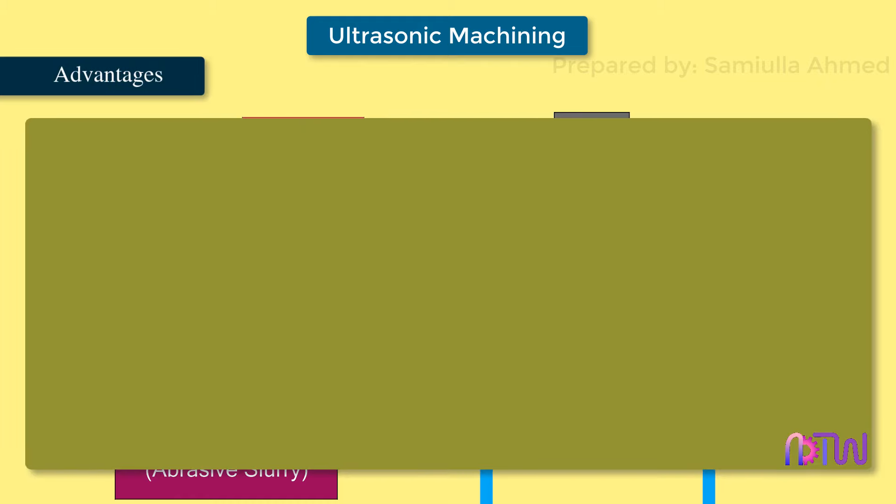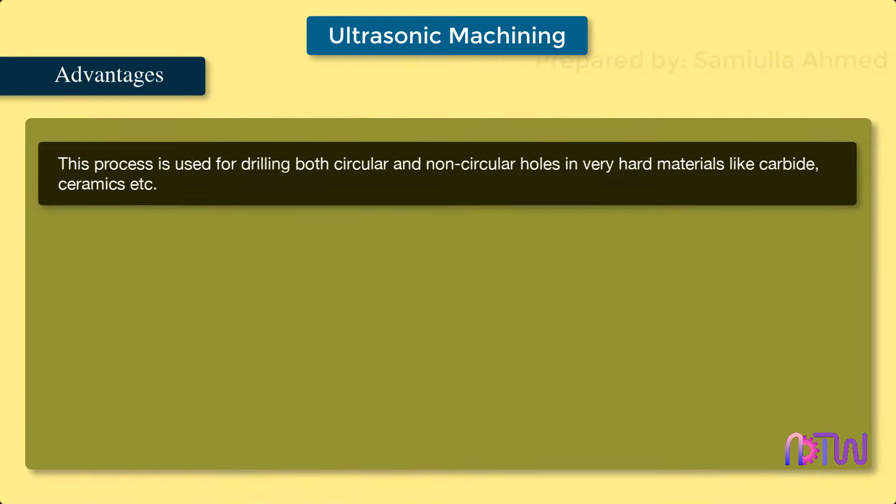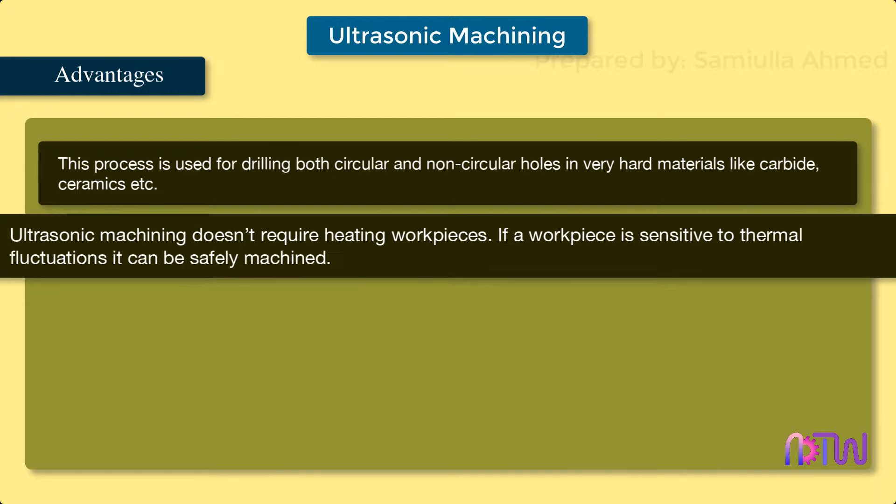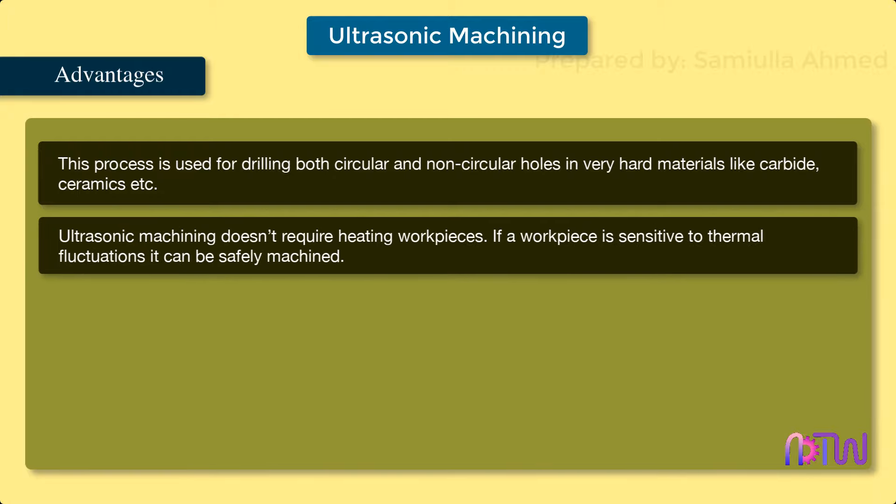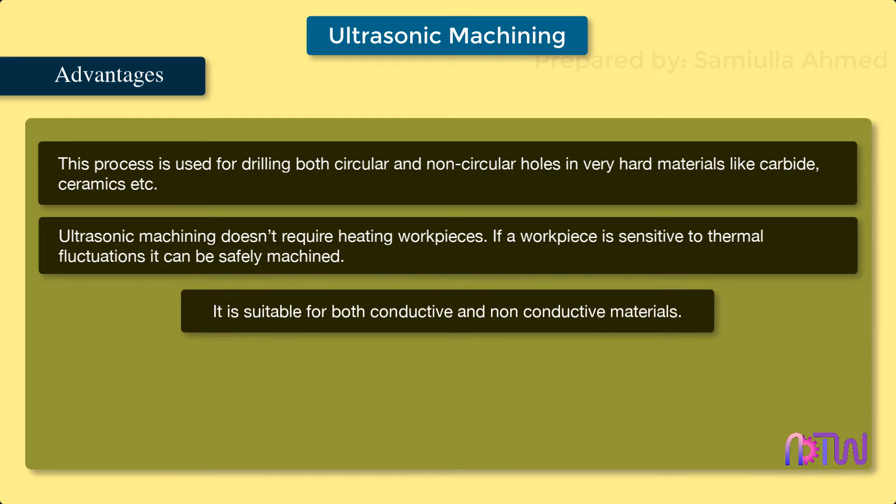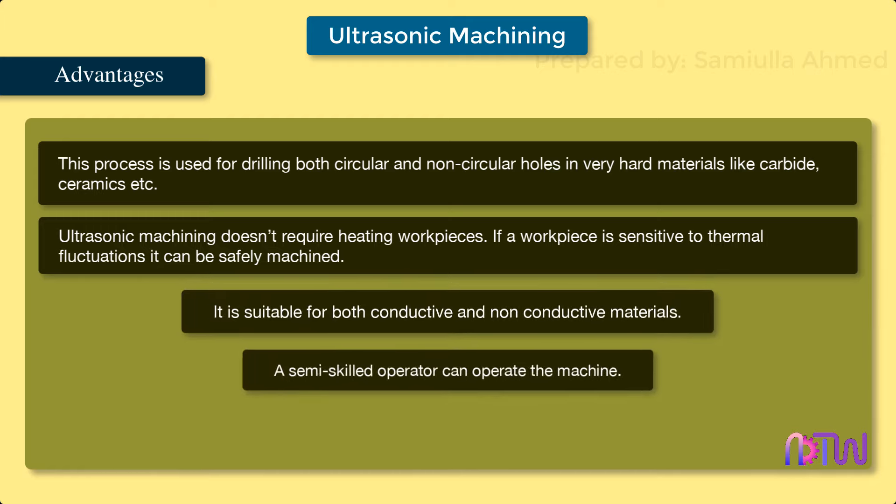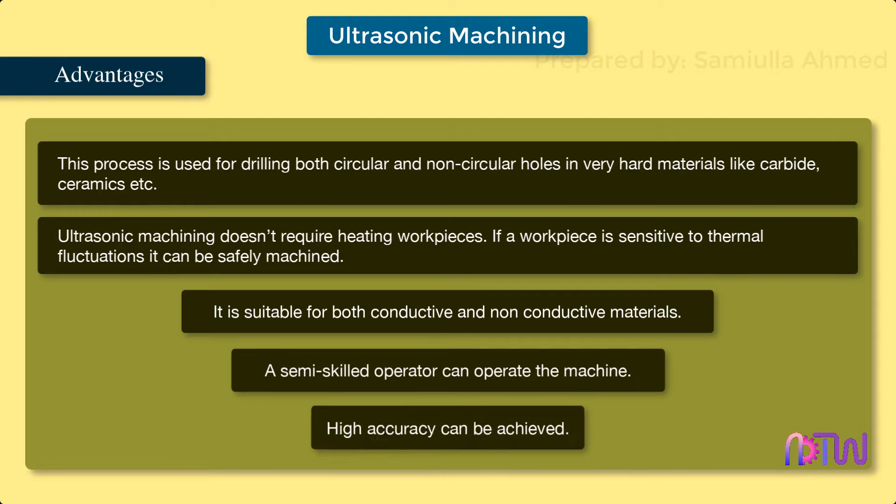Advantages: This process is used for drilling both circular and non-circular holes in very hard materials like carbide and ceramics. Ultrasonic machining doesn't require heating workpieces, so if a workpiece is sensitive to thermal fluctuations, it can be safely machined. It is suitable for both conductive and non-conductive materials. A semi-skilled operator can operate the machine, and high accuracy can be achieved.